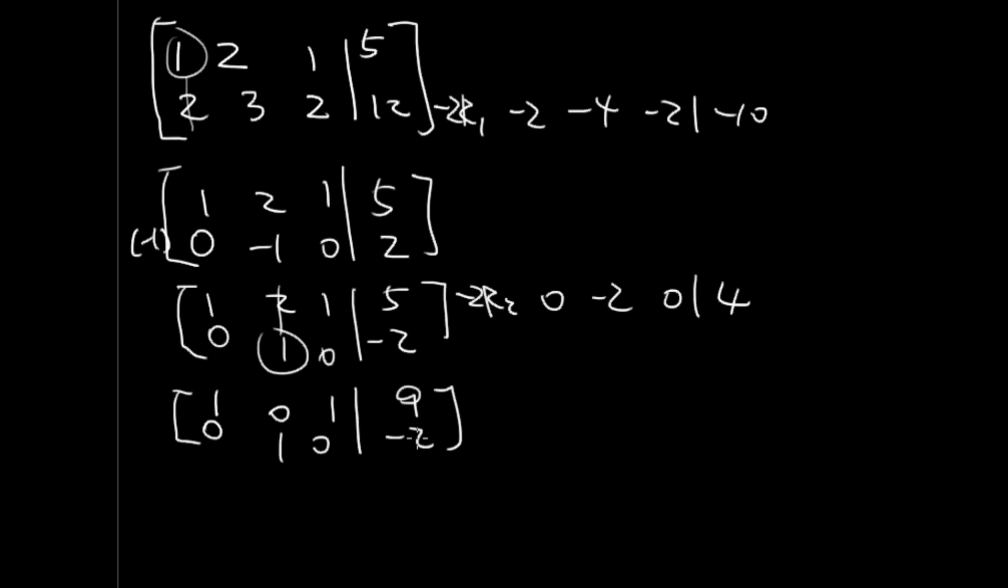This is fully reduced because we have a leading 1 for each row. This is not a leading 1 because it doesn't lead the row.